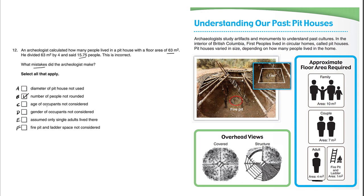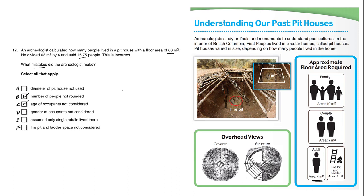Choice C: age of occupants not considered. When you pick 15.75, that's assuming these people are adults, but we're not considering whether some occupants are children. We cannot assume that everyone's an adult, so choice C could be correct.